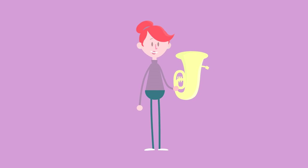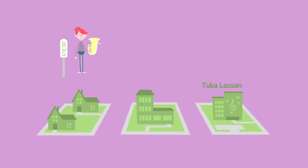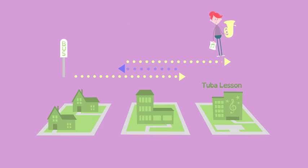Here's Lucy. She needs to walk to her tuba lesson, three blocks from the bus stop. After walking two blocks, she realizes she dropped her sheet music. She goes back one block, finds it, then continues to her lesson.